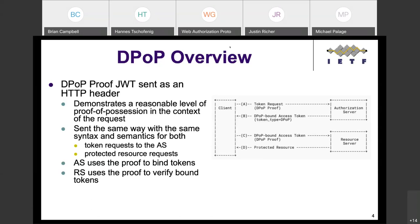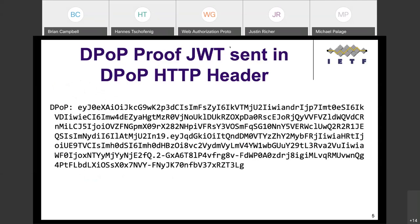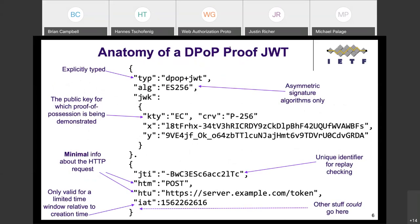We introduced a new construct called a DPoP proof, which is a JWT sent as an HTTP header. It's sent on every request to both the authorization server and the resource server. It attempts to demonstrate a reasonable level of proof of possession in the context of that particular request. The proof is explicitly typed, only supports asymmetric signature algorithms — because you need to prove possession of the private key — and the public key itself is included in the header of the JWT.